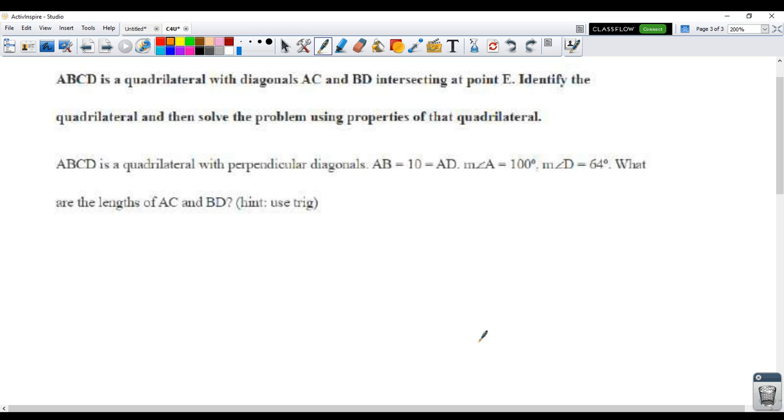In this video about quadrilaterals, we have the four points ABCD and we have diagonals that are AC and BD. They intersect at point E. So we're told that ABCD is a quadrilateral with perpendicular diagonals. So let's think about all the quadrilaterals that have perpendicular diagonals.